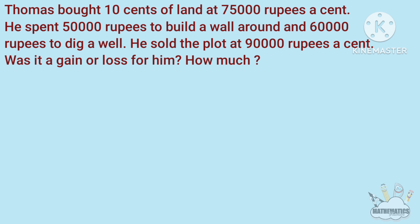Thomas bought 10 cents of land at 75,000 rupees a cent. He spent 50,000 rupees to build a wall around and 60,000 rupees to dig a well. He sold the plot at 90,000 rupees a cent. Was it a gain or loss for him? How much?